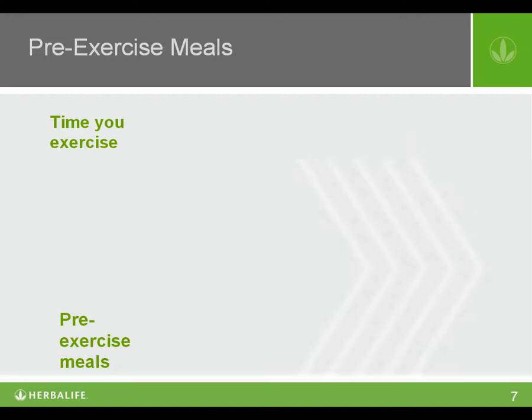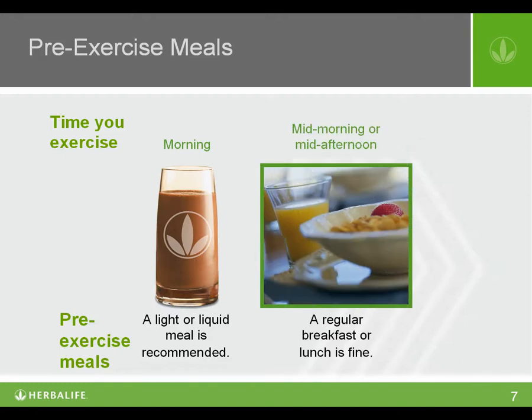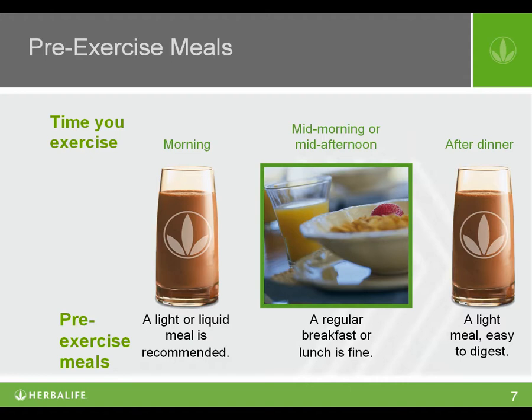If you're going to exercise in the morning and won't have much time to digest your meal before working out, then a light or liquid meal is best — a protein shake or some cottage cheese with fruit would work great. If you work out mid-morning or mid-afternoon, then a regular breakfast or lunch is fine; you'll have plenty of time to digest your meal. If you usually work out after dinner, then your dinner meal should be light — a protein shake or a bowl of soup would be good choices.